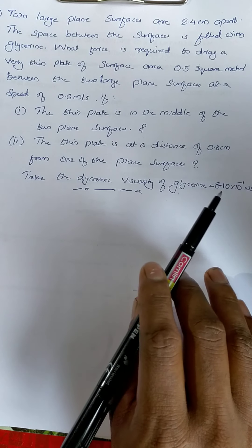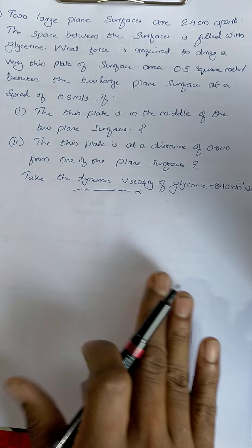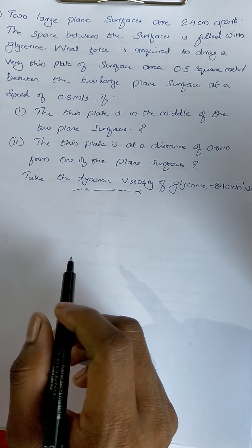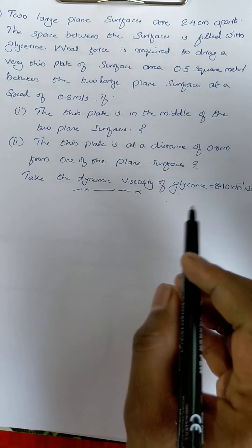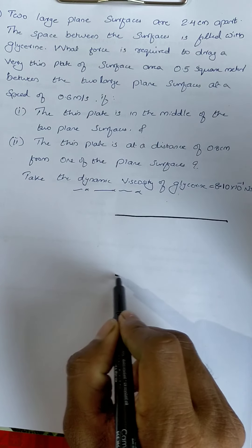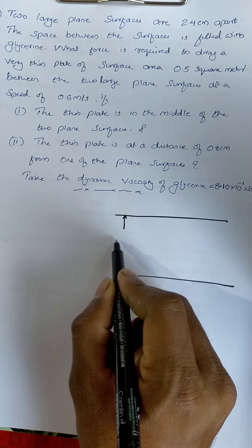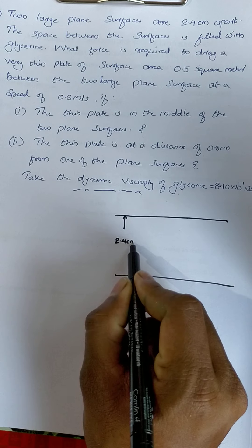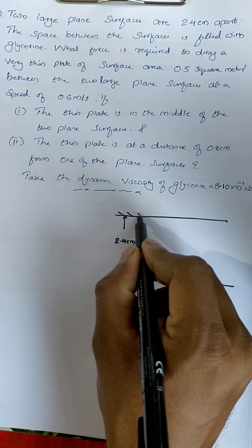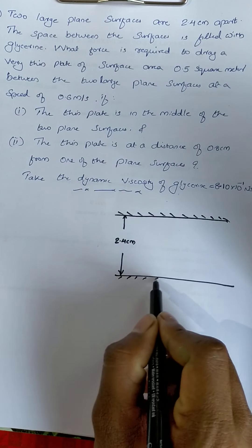In this problem, the given data: the distance between the two large plane surfaces is 2.4 cm apart. We have to identify the fixed plane and the movement between the two large plane surfaces.